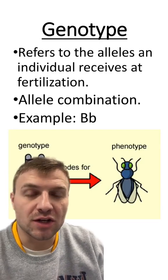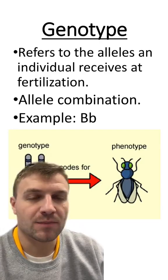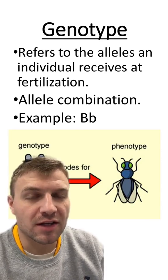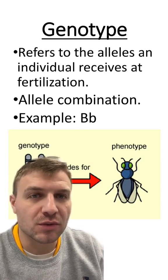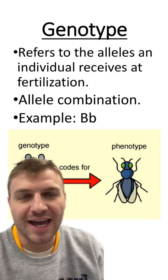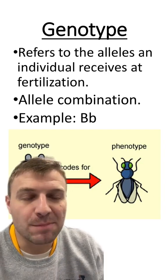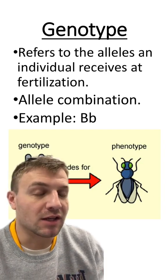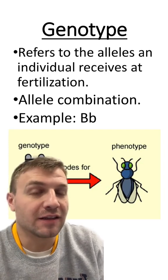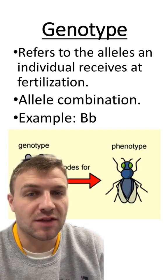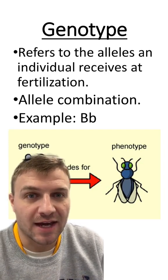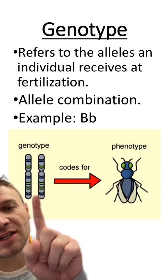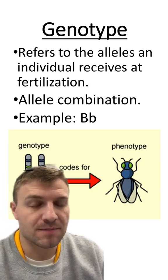Let's talk about what the term genotype means. Within genetics, a genotype refers to the alleles an individual is going to inherit at fertilization. An example of an allele would be like big B, little b — this is just showing the allele combination that the organism has. These genotypes are going to be found on genes on the homologous pairs of chromosomes.